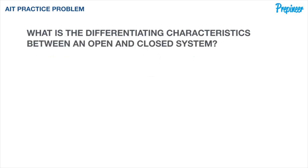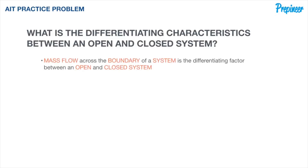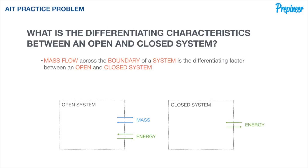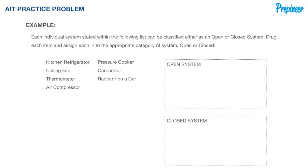So what differentiates an open and a closed system? Simple: mass flow across the boundaries. The boundary of an open system allows transfer of both matter and energy. The boundary of a closed system allows transfer of energy as heat and work, but not of matter. Now, rallying back to our list of systems, we will determine where each falls based on these characteristics, starting with the kitchen refrigerator.